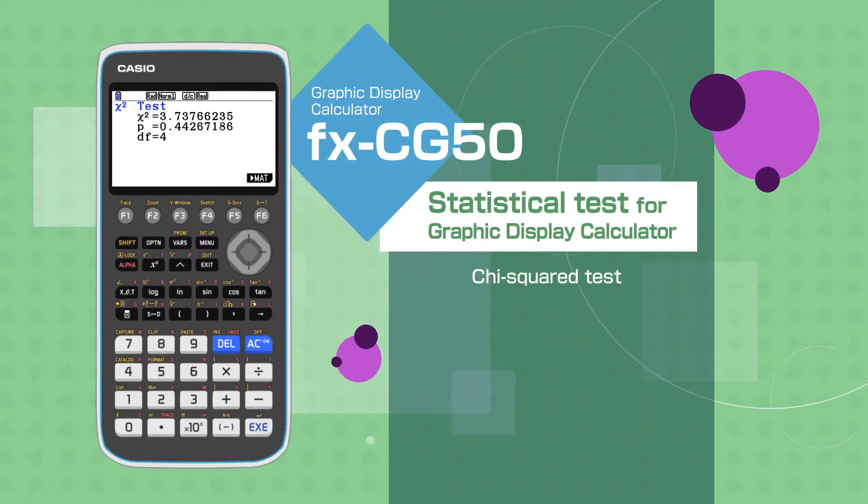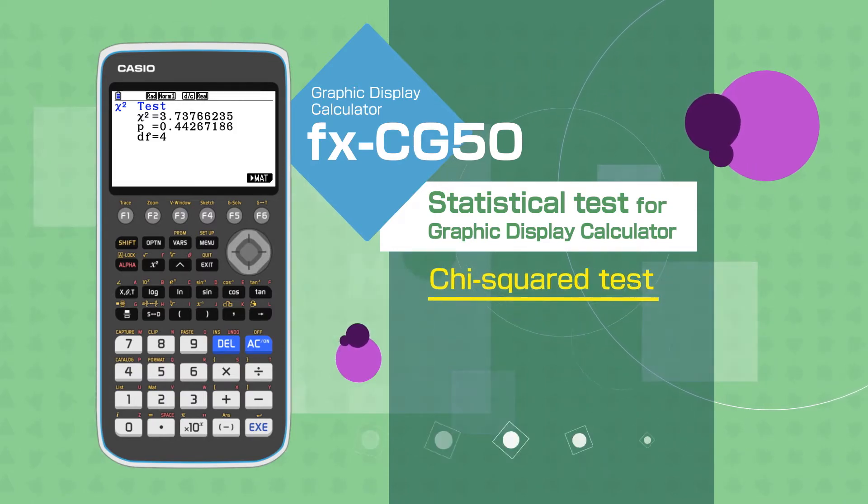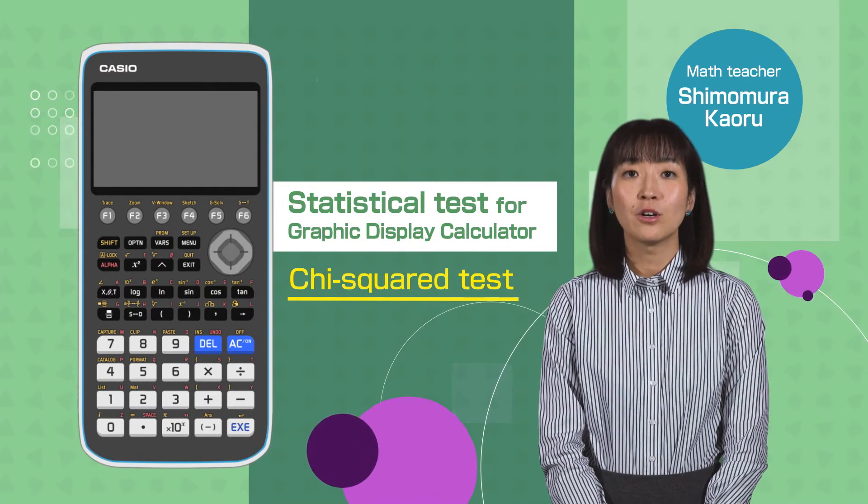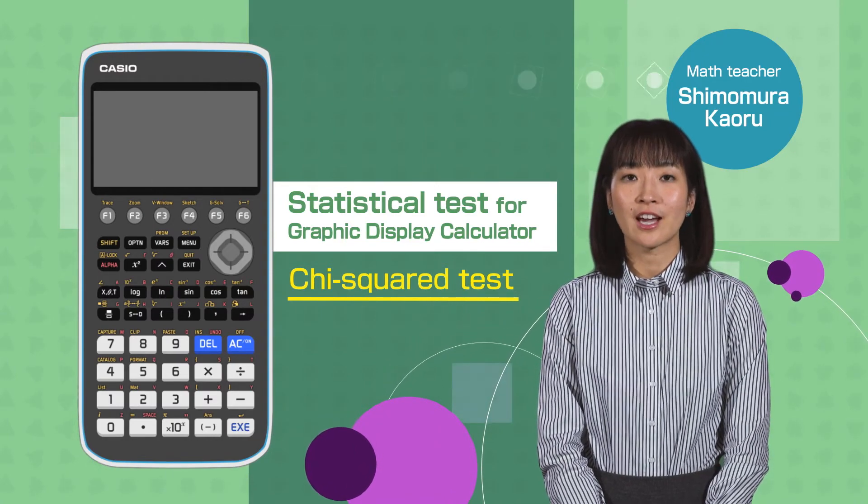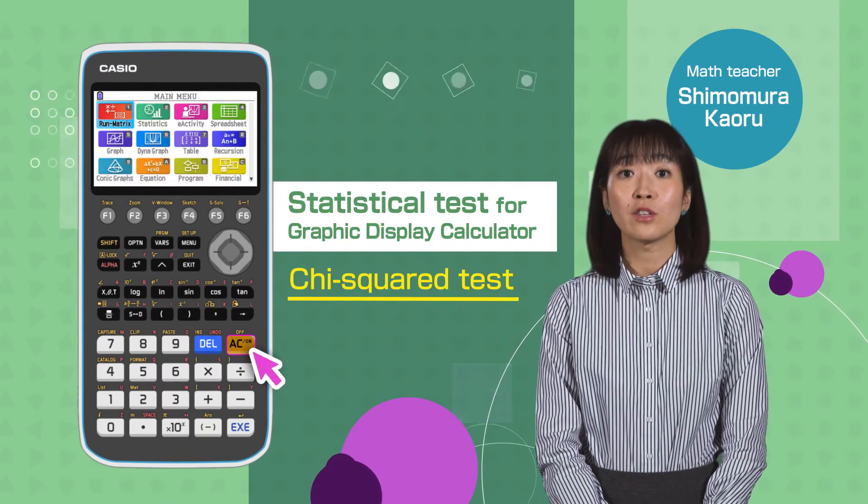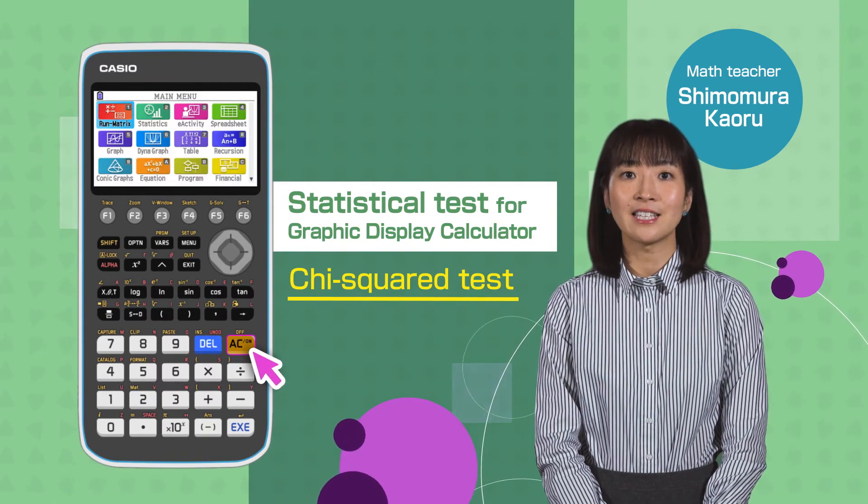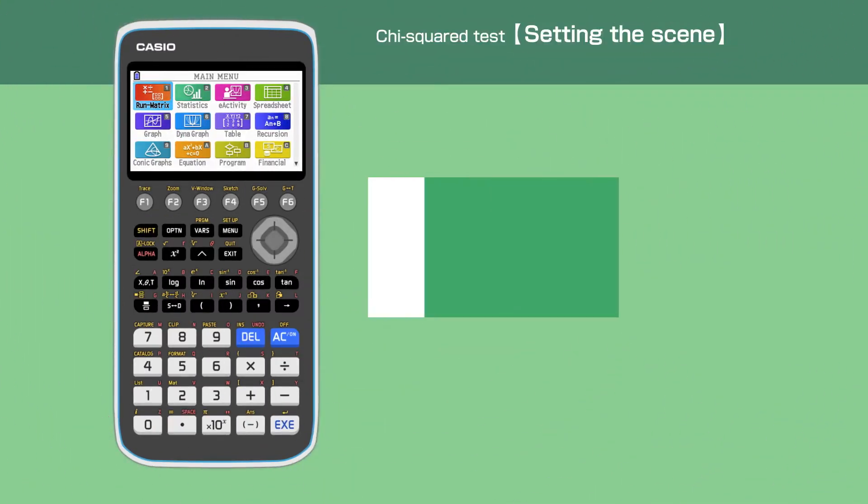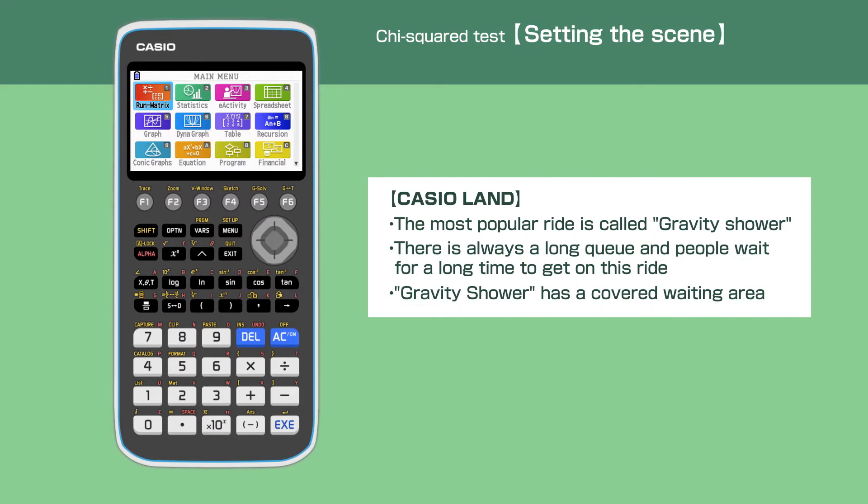Statistical test for graphic display calculator: chi-squared test. Hi everyone, in this video we are going to show how to calculate chi-squared values using Casio FX-CG50. Switch on your calculator by pressing the AC button. The theme park Casio Land has 32 rides.